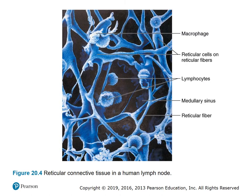Figure 20.4 shows reticular connective tissue in a human lymph node. Here we can see a macrophage, reticular cells on reticular fibers, and the lymphocytes.